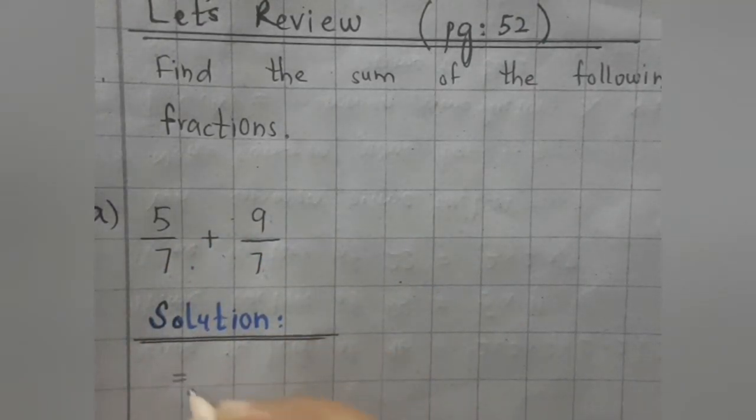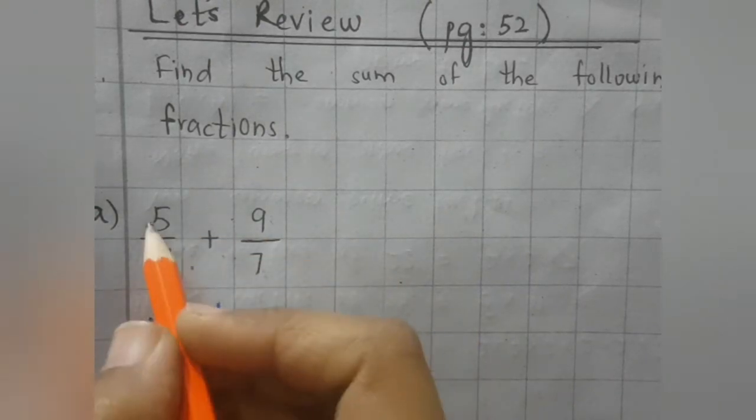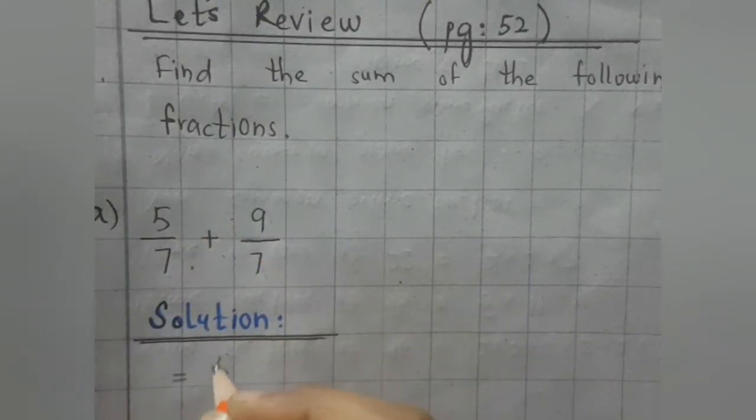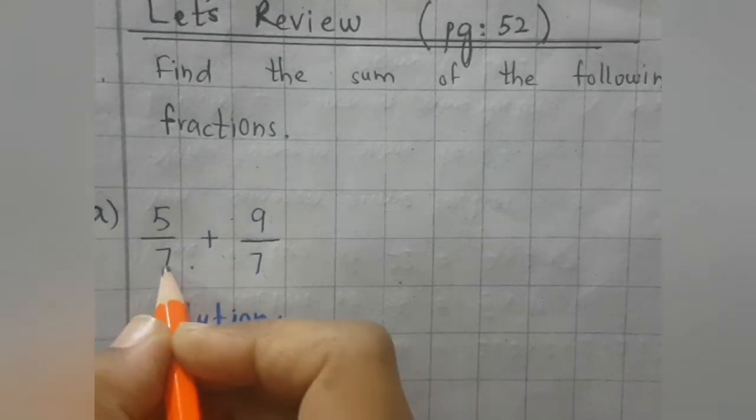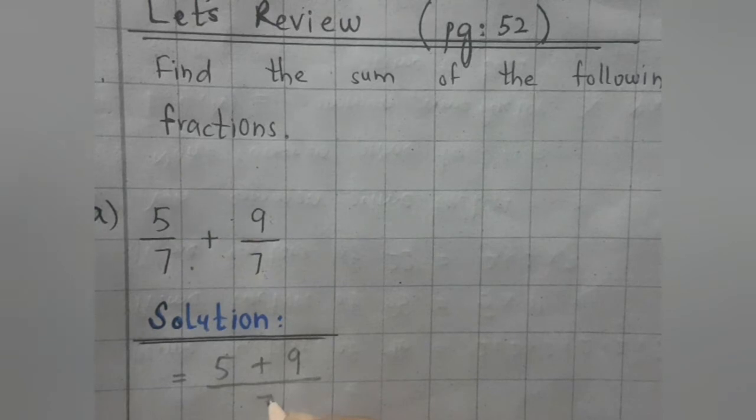Let's see how we will solve it. First we will write 5 plus 9 and we will write the common denominator that is 7.